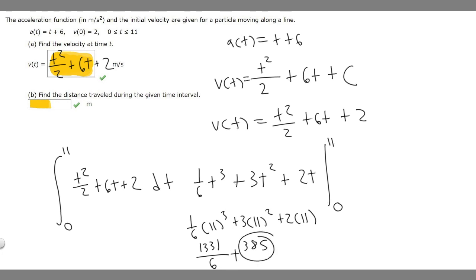So 363 plus 22 gives us 385. What I'm going to do is make this to be over 6 so we can add these better. So 385 times 6 is 2,310 over 6. Let's add these together. So 1,331 plus 2,310 gives us 3,641 over our denominator, so 6.